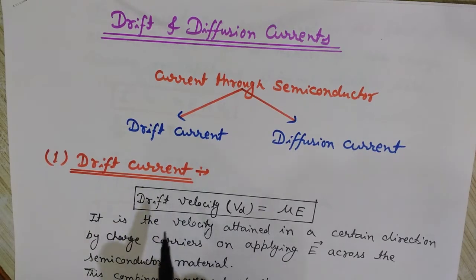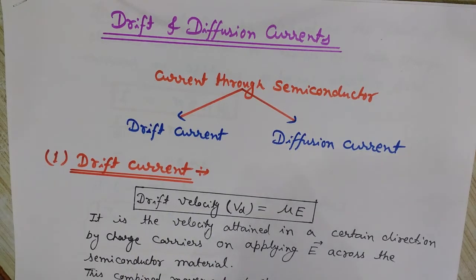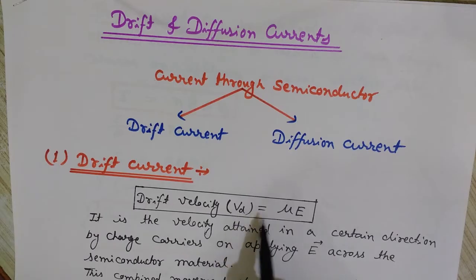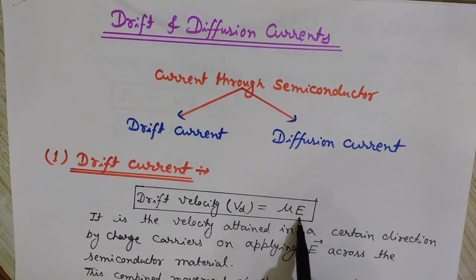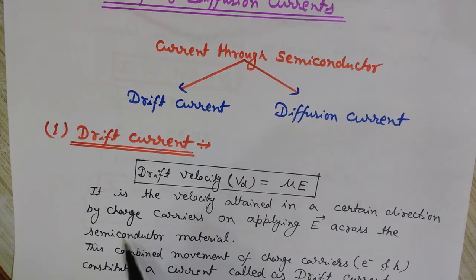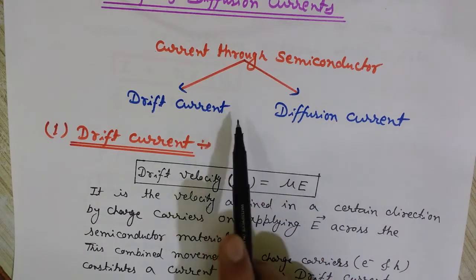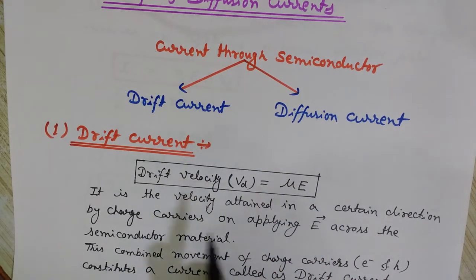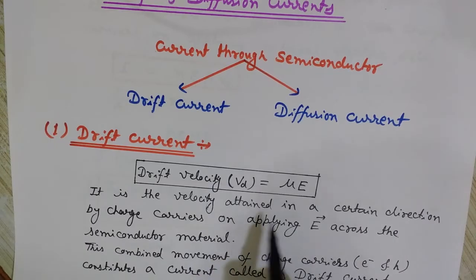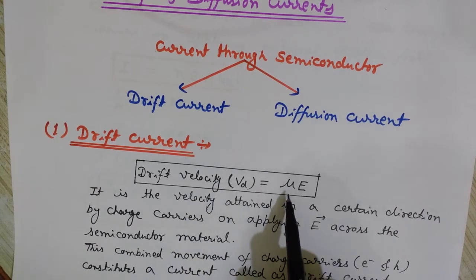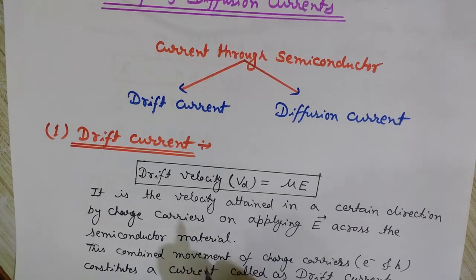Before understanding drift current, I will explain drift velocity. This is the drifting of charge carriers in the presence of an externally applied electric field. Drift velocity is given as Vd — the notation for drift velocity — and it is given by μ into E, where E is the electric field applied across the semiconductor material and μ is the mobility of charge carriers.